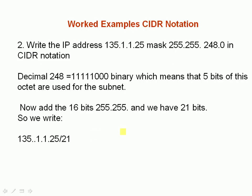Another CIDR notation example: write the IP address 135.1.1.25 with the mask 255.255.248.0 in CIDR notation. Convert 248 into binary — it looks like 5 ones and 3 zeros — which means 5 bits of the octet are being used for the subnet and 3 bits are used for the host. Now we add 16 bits from there, and we have 16 plus 5, which is 21 bits. So we write it as 135.1.1.25/21, because 21 bits are being used for the subnet.